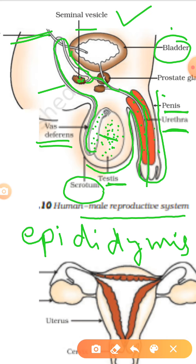The two testes remain stored in a skin covering known as scrotum. The scrotum is this skin covering which keeps the testes hanging down outside the abdominal cavity. This hanging helps the testes to maintain a temperature lower than the body temperature, which is very essential for the maturation of sperms. That is the main function of the scrotum.